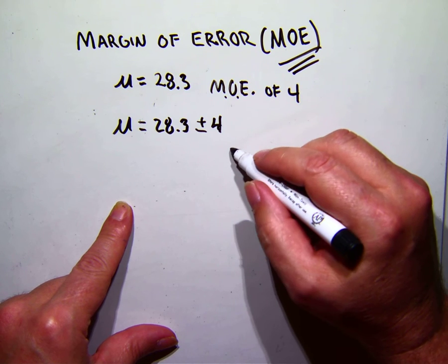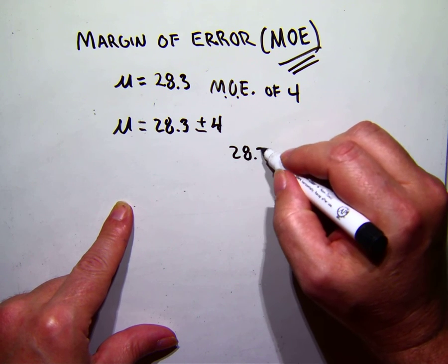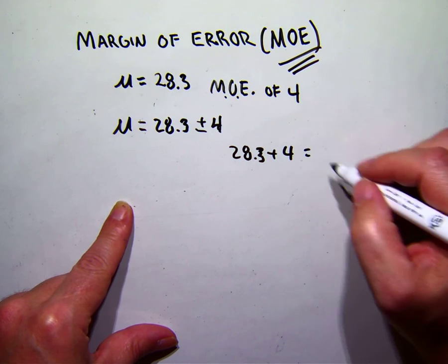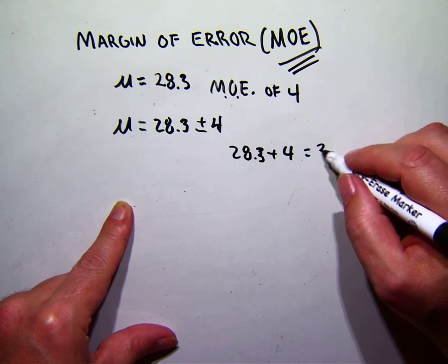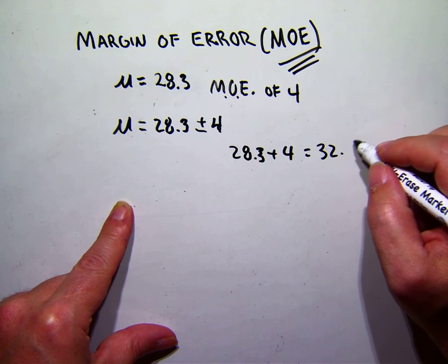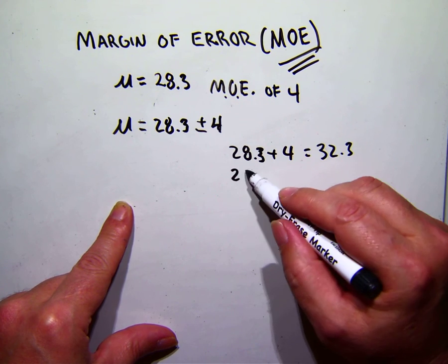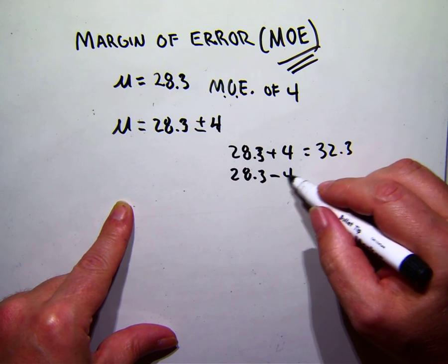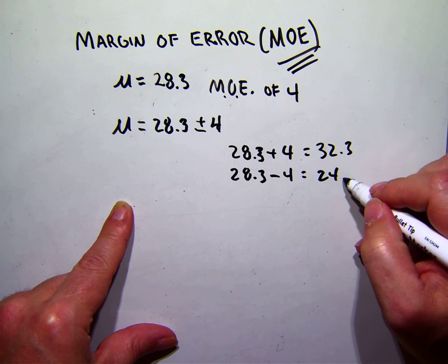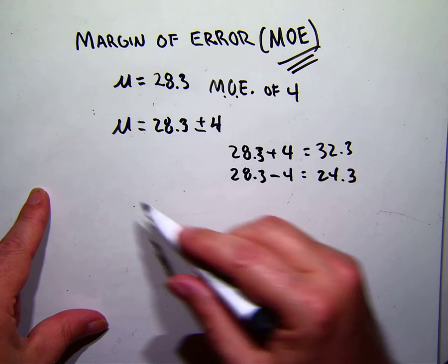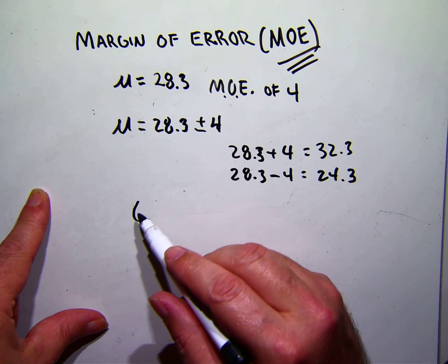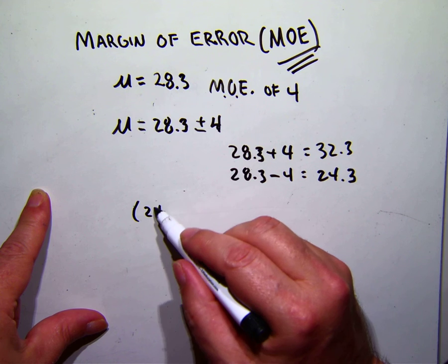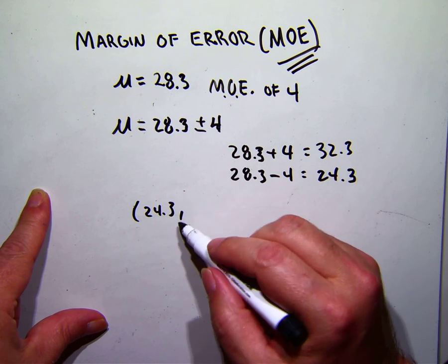So what we're essentially going to do is create an interval with that margin of error. So if we add four, we get 32.3 grams, and if we subtract four, we get 24.3 grams.